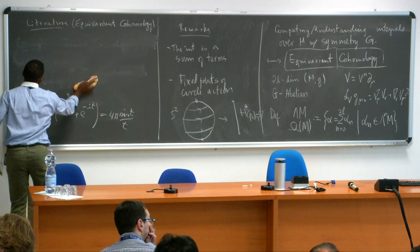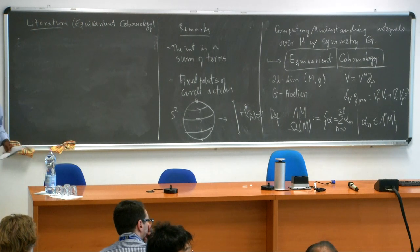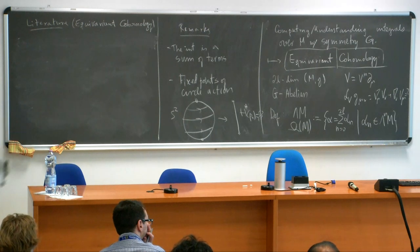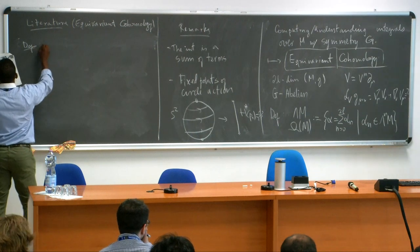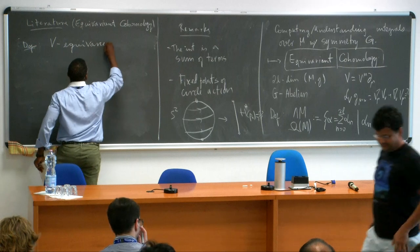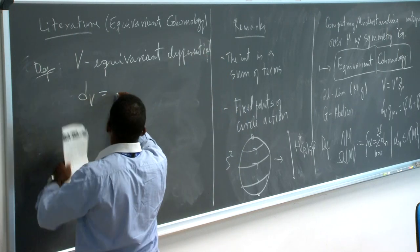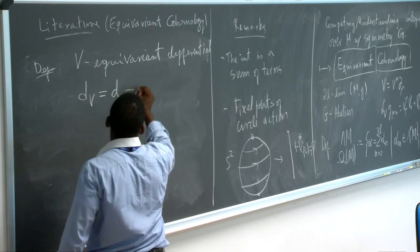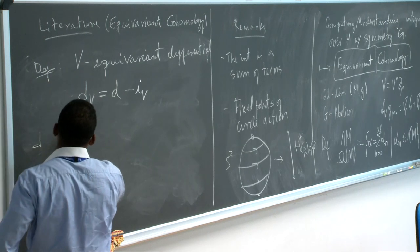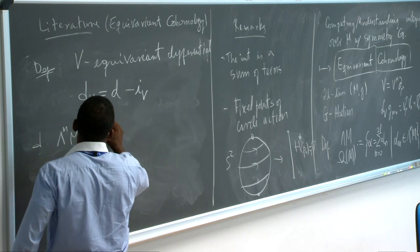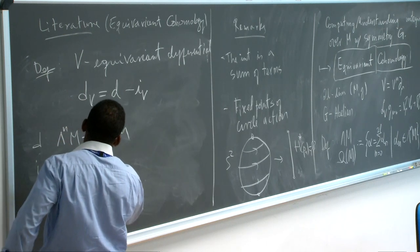So the first definition is the space of polyforms: it is a sum of differential forms of degree 0 to 2L. The second definition is the V-equivariant differential: D_V equals the standard exterior differential d, plus the contraction i_V. The exterior differential d takes an n-form and sends it to an (n+1)-form, while the contraction i_V sends an n-form to an (n−1)-form.